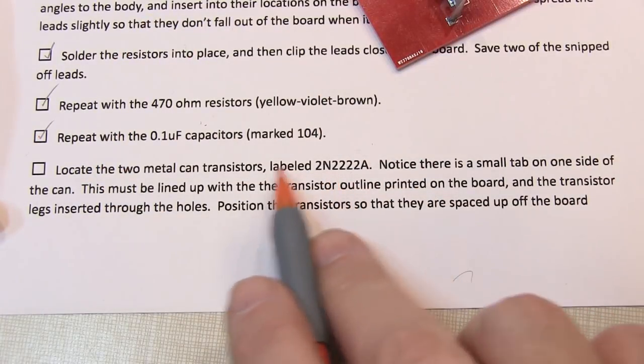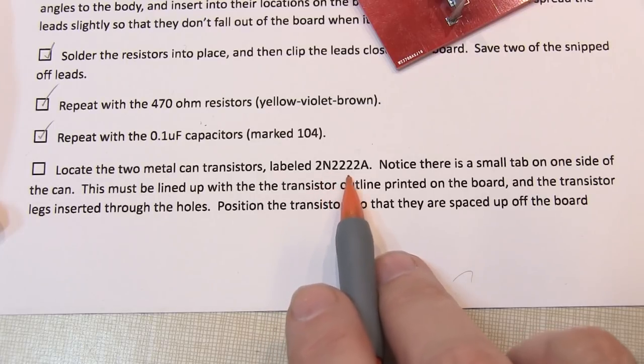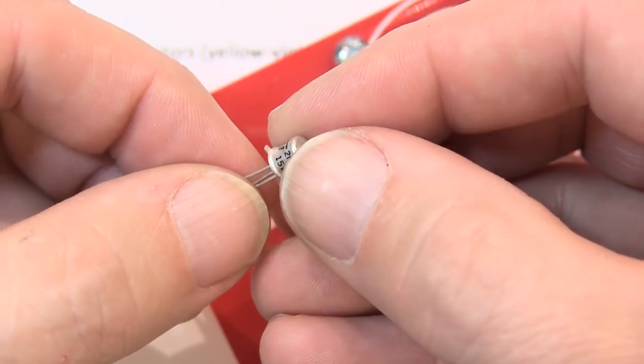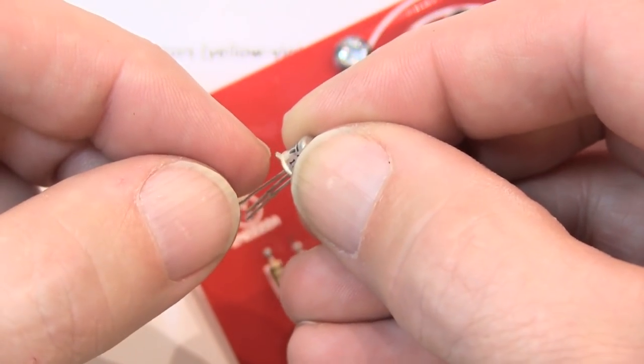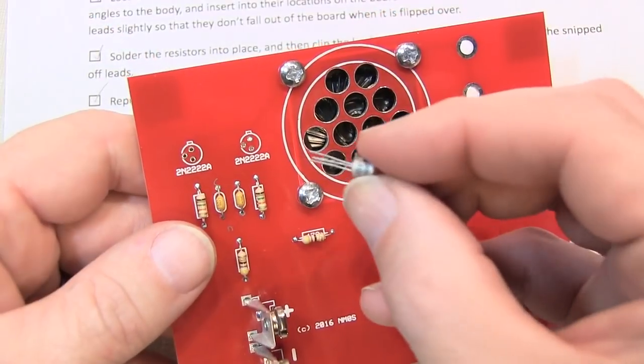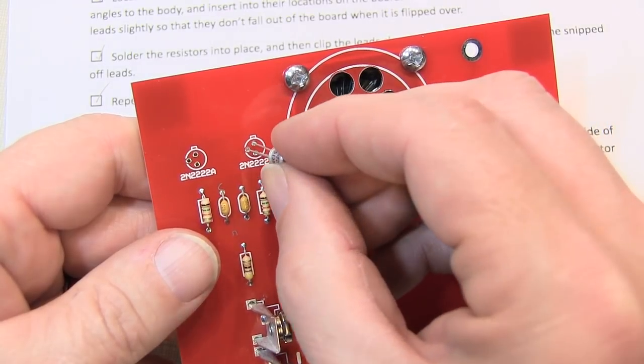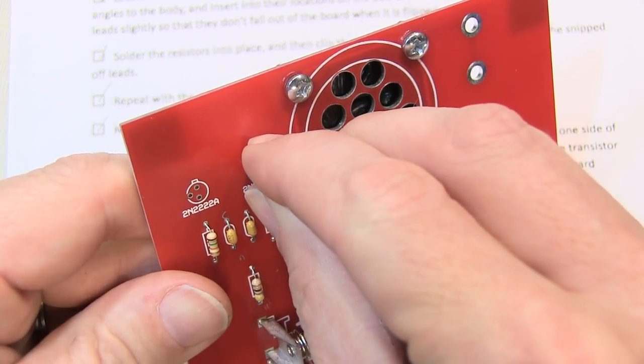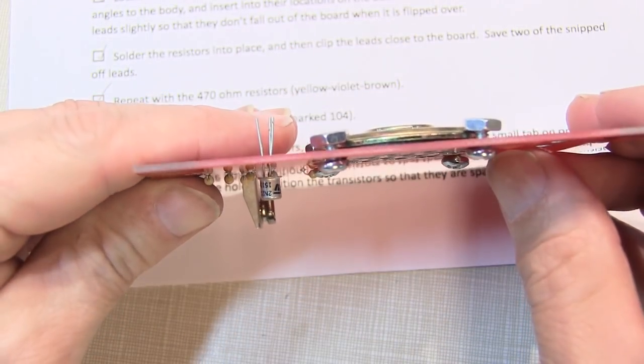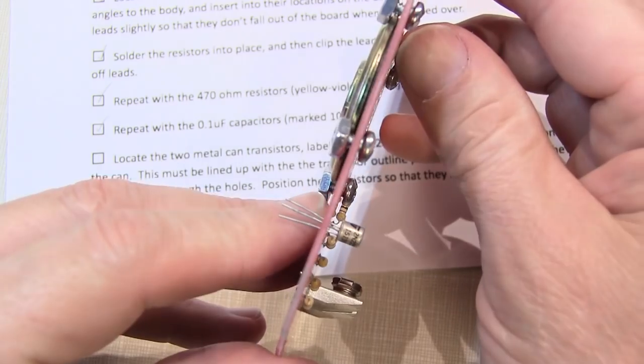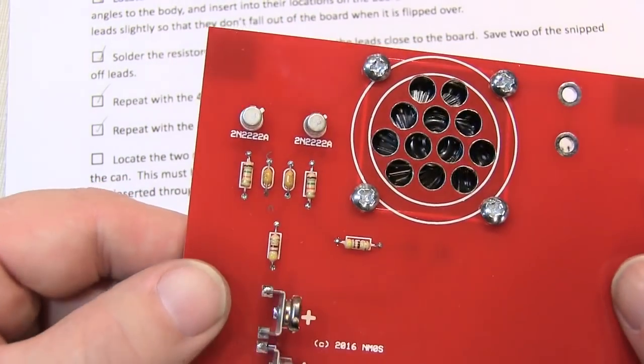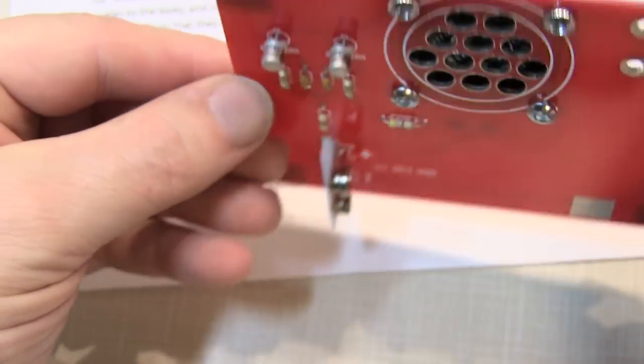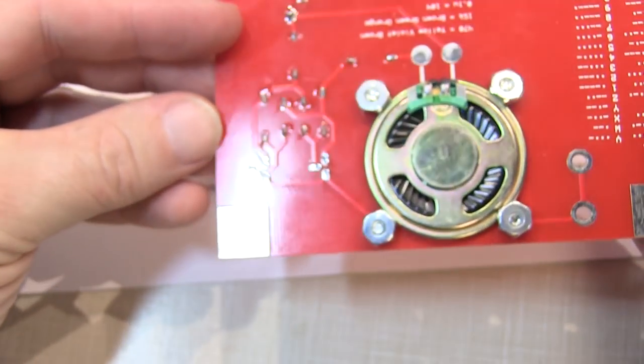Okay the resistors and capacitors are now done. Next we're going to start with the two metal can transistors. They're labeled 2N2222A. Now you'll notice these transistors they have three legs and there's a small tab on one portion of the can. So with the tab facing up we'll install the three leads of the transistor and slide it down so that it's not quite touching the board spaced up by about a sixteenth of an inch or so like I've shown here. Install the second transistor the same way spaced up by about the same amount and then you can flip the board over and solder all six of those legs.